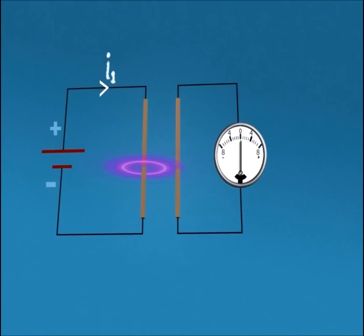We can also experience that EMF is again induced in the second conductor when we remove the battery. This is because of reduction in flux density around the first conductor, and the second conductor tries to oppose this change in flux.